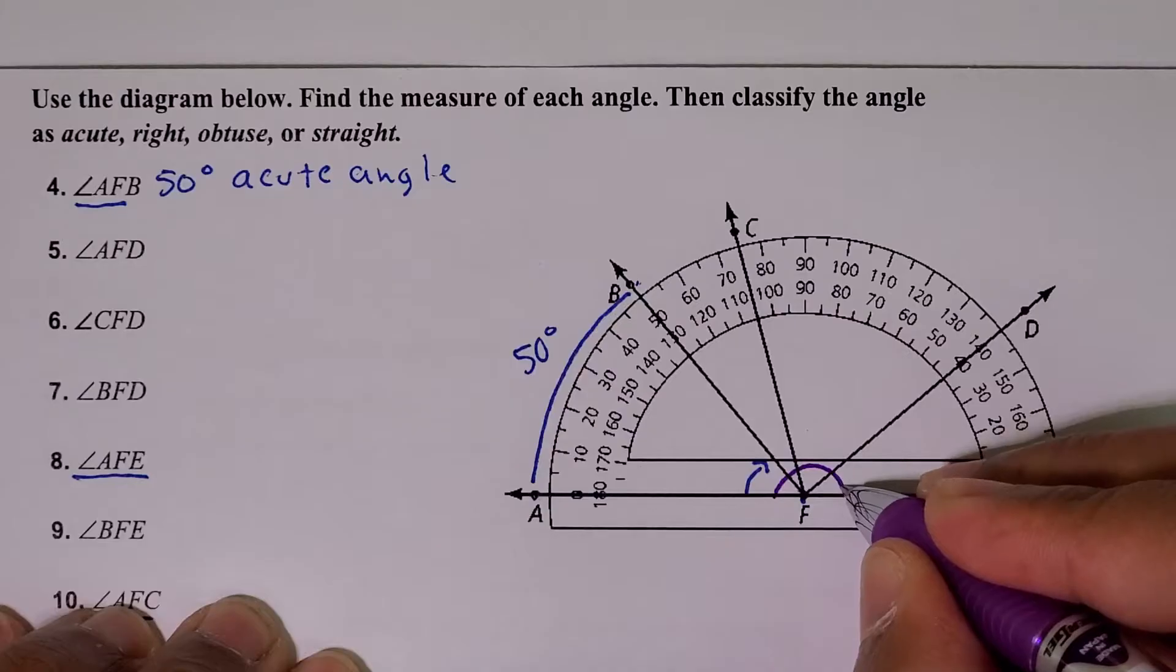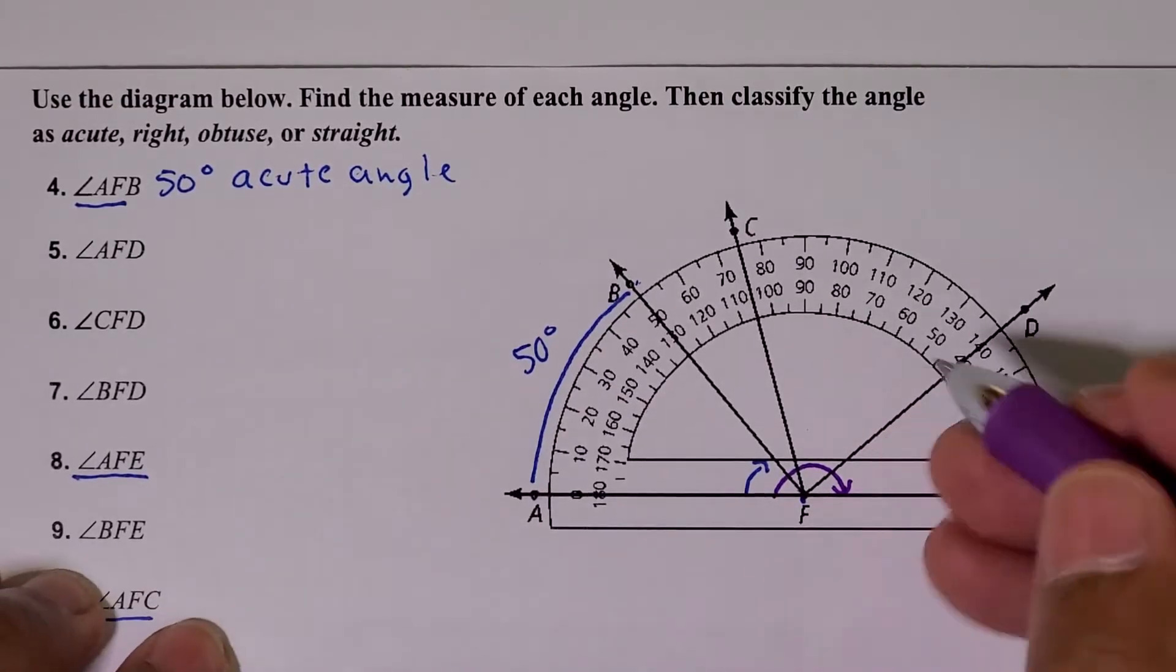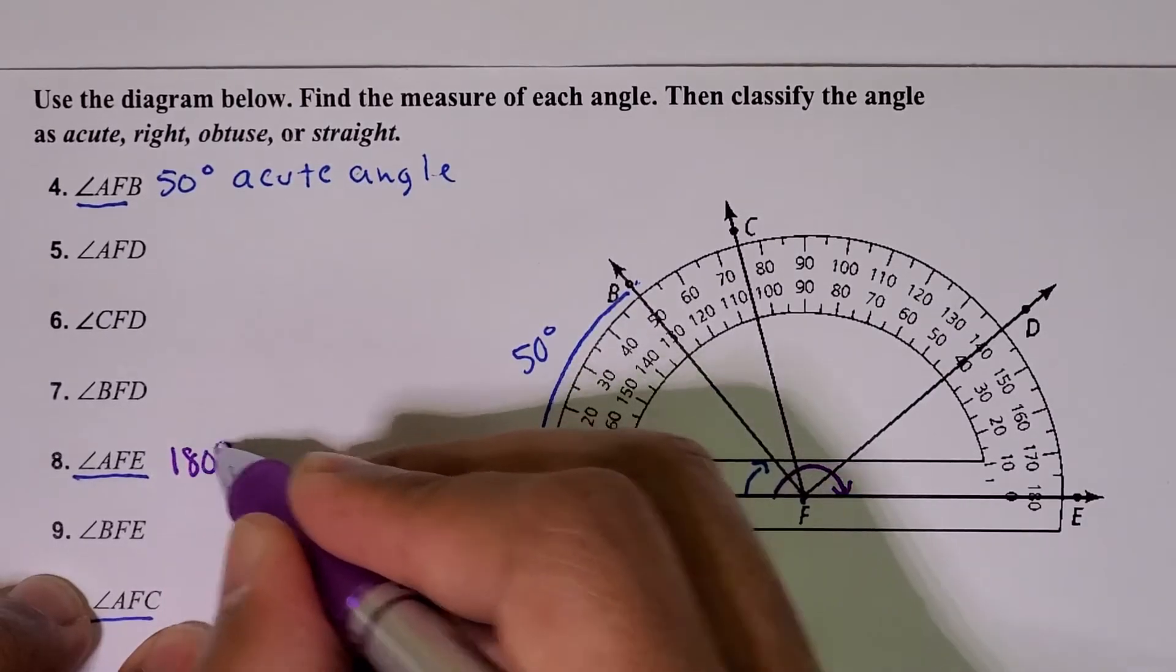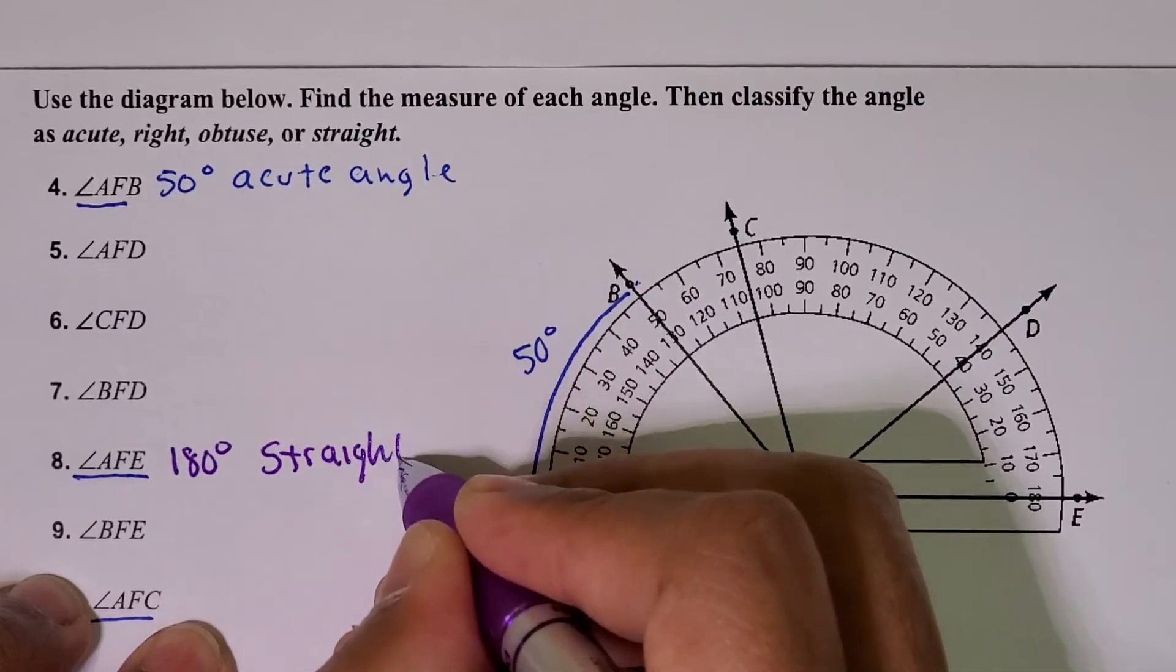So that makes it a straight angle. This angle has a measure of 180 degrees, and we say that this is a straight angle. That would be its classification.